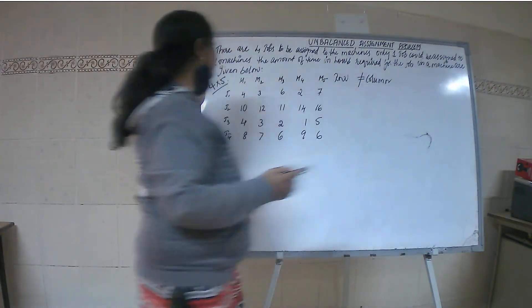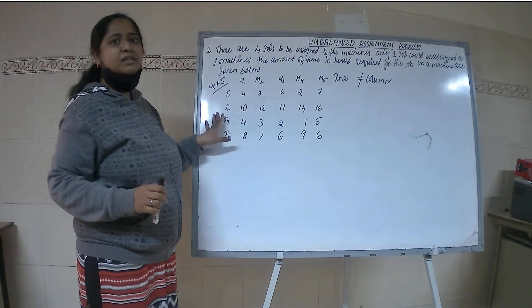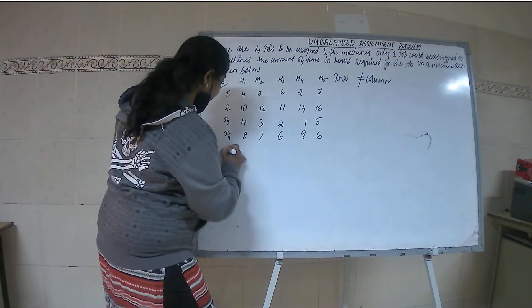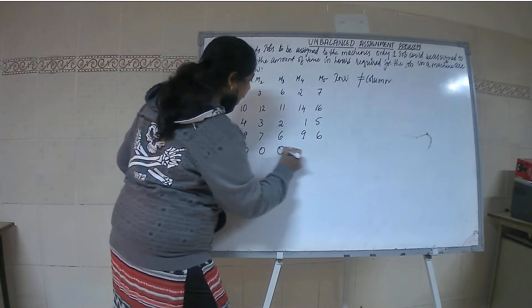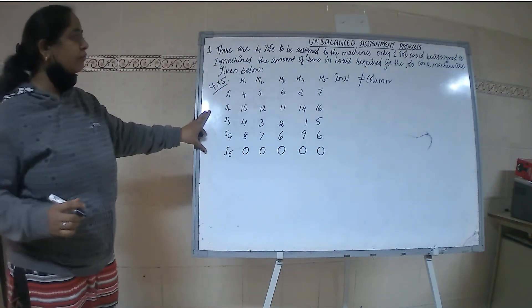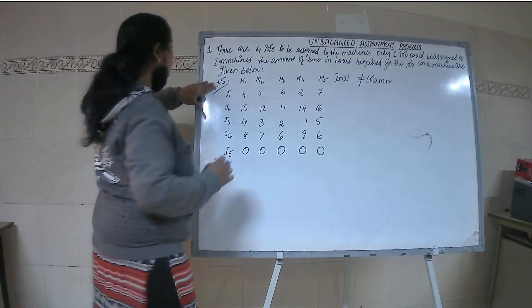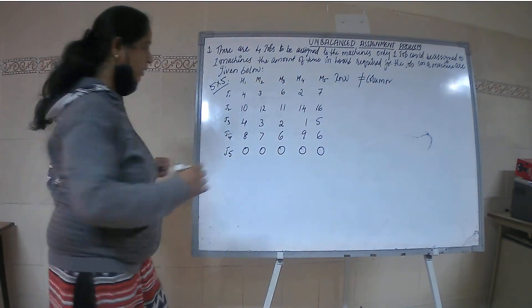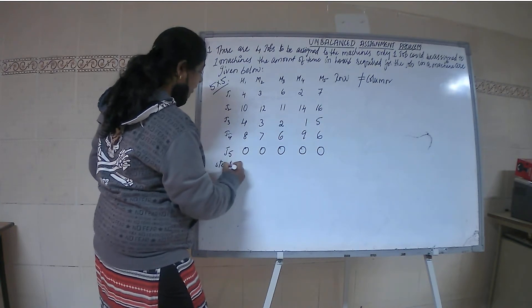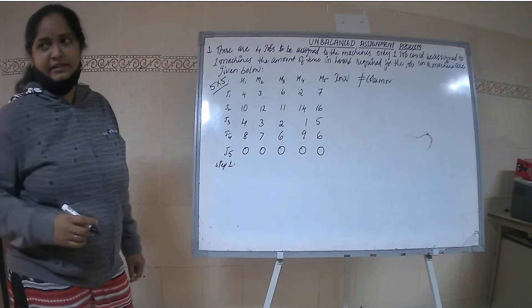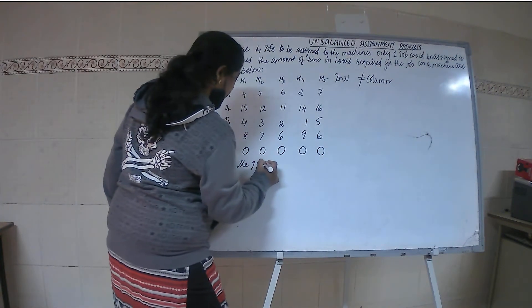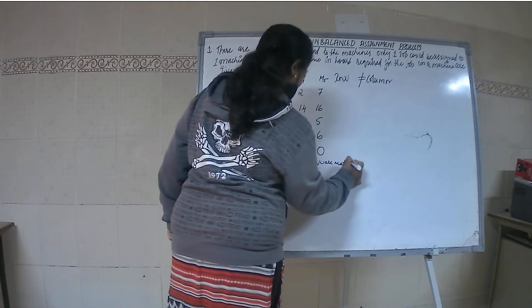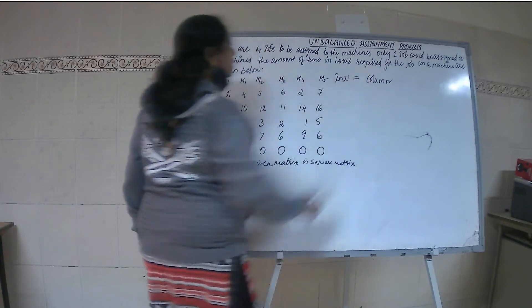The time required for the job in the machine are given below. First thing is you convert this unbalanced assignment problem into balanced assignment problem. That is J5 where we add zeros - this is a dummy row, making it into 5 by 5 matrix. Step 1: The given matrix is now a square matrix where number of rows equals number of columns.